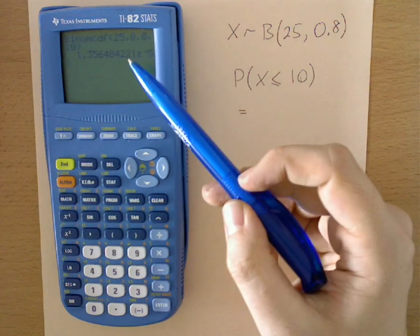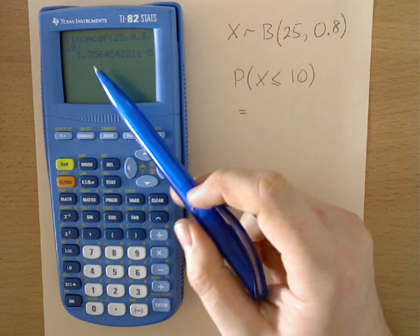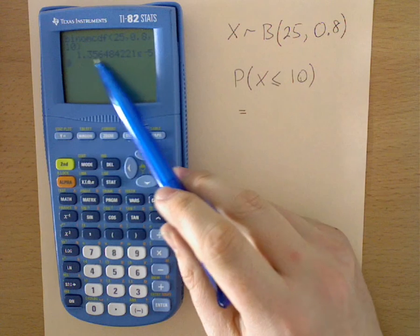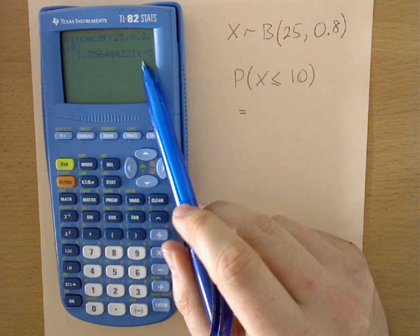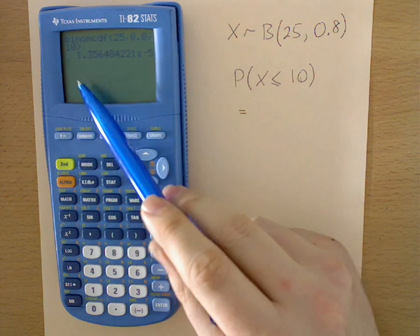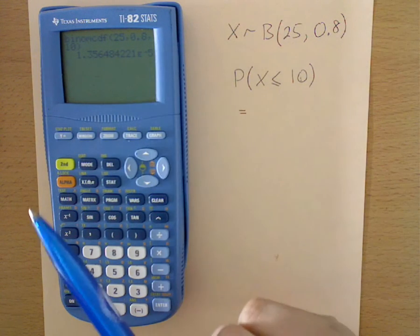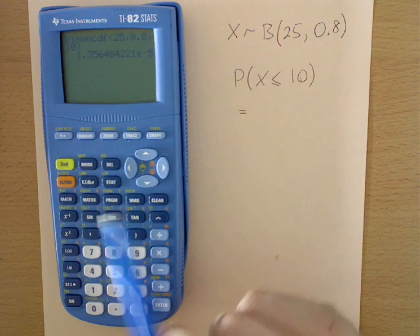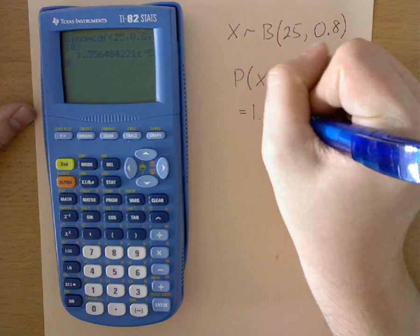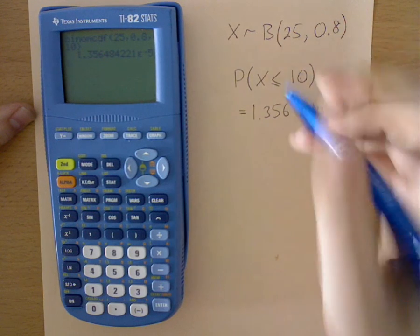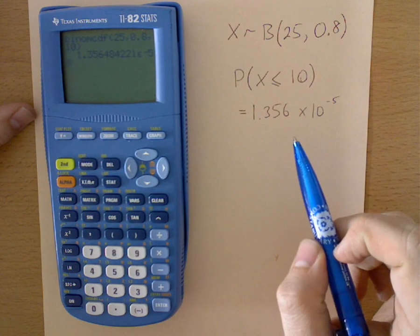So this then comes up with the probability of, in this case, being quite a low probability of 1.356 times 10 to the power of minus 5. So 1.356 times 10 to the power of minus 5, so that's to four significant figures there.